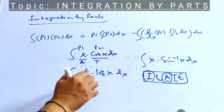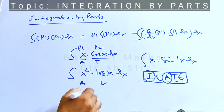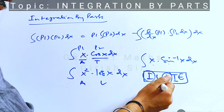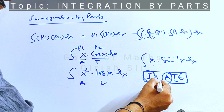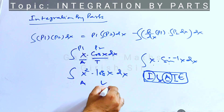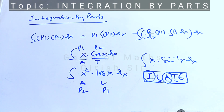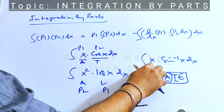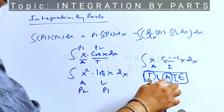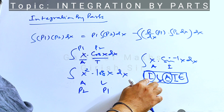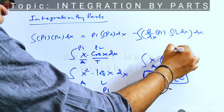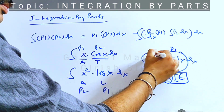In this example, we have algebraic and log functions. Since log has higher priority, log is selected as P1 and algebraic as P2. In another case, we have algebraic and inverse functions. Since inverse has higher priority, the inverse function is selected as P1 and the algebraic as P2.